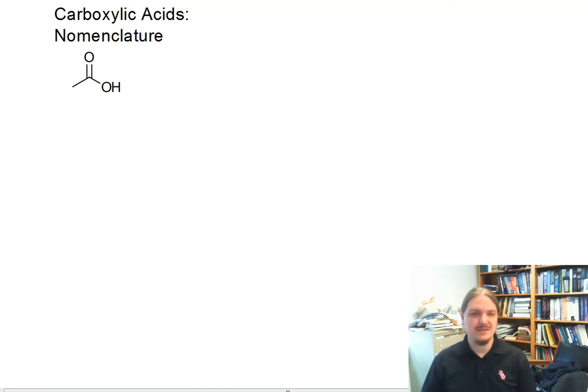So carboxylic acids, here's the carboxylic acid functional group. It's a carbonyl group with an OH on one side and some hydrocarbon group on the other. The systematic name for carboxylic acids is to identify the parent chain and use the appropriate prefix.